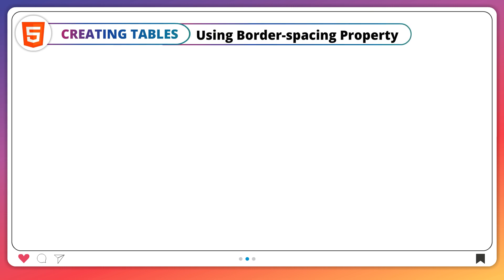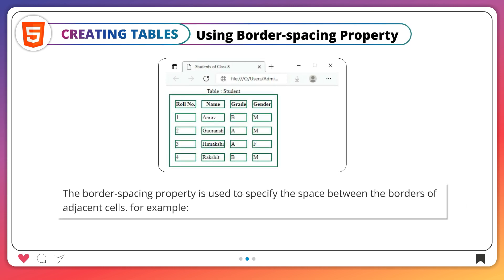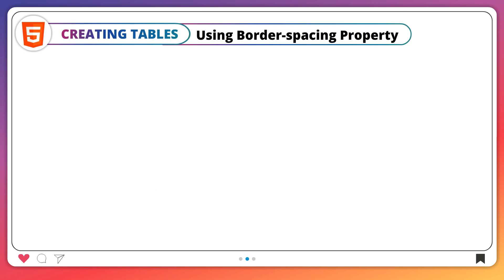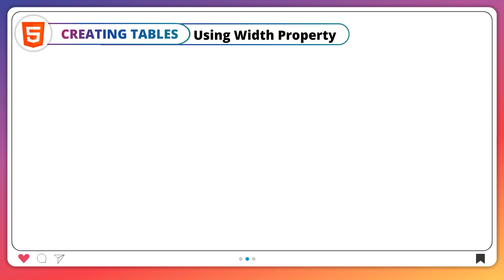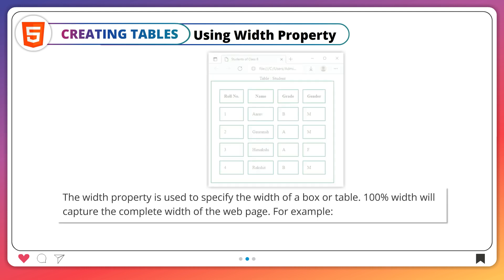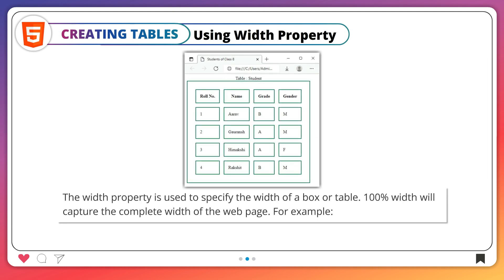Using the border-spacing property: the border-spacing property is used to specify the space between the borders of adjacent cells. For example. Using the width property: the width property is used to specify the width of a box or table. 100% width will capture the complete width of the web page. For example.